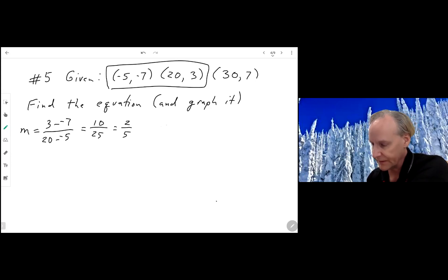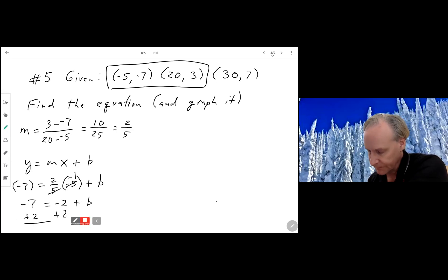Now, we can substitute into y equals mx plus b. And what's really nice is it doesn't make any difference which one of these three points you use. Let's do the negative 5, negative 7. So I'm going to write y equals mx plus b. And I'm going to choose y is negative 7, m is 2 fifths, x is negative 5 plus b. And that gives me negative 2 plus b equals negative 7. And I'm going to add 2 to both sides. So b equals negative 5.